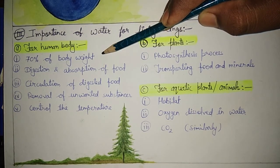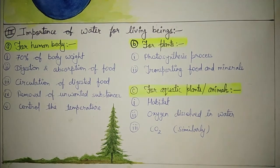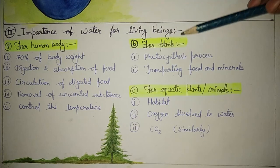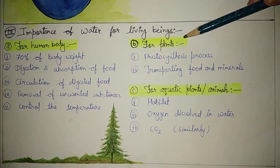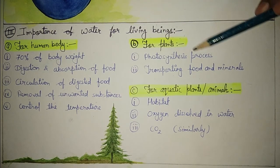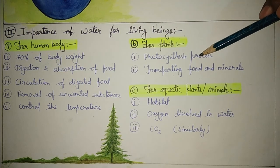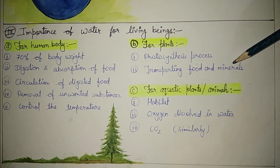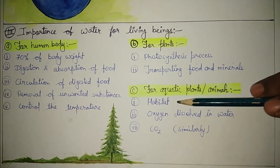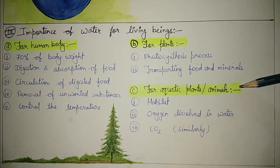Because of water we can control body temperature by sweating. A healthy body needs at least 2 to 3 liters of water daily. Next, for plants — water is very important because without water, plants cannot make their food, meaning the photosynthesis process cannot occur. Second, transporting food and minerals is also possible only because of water.